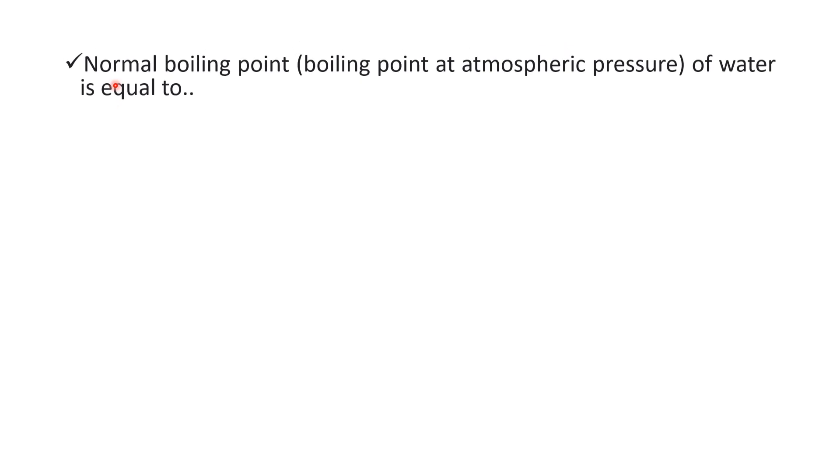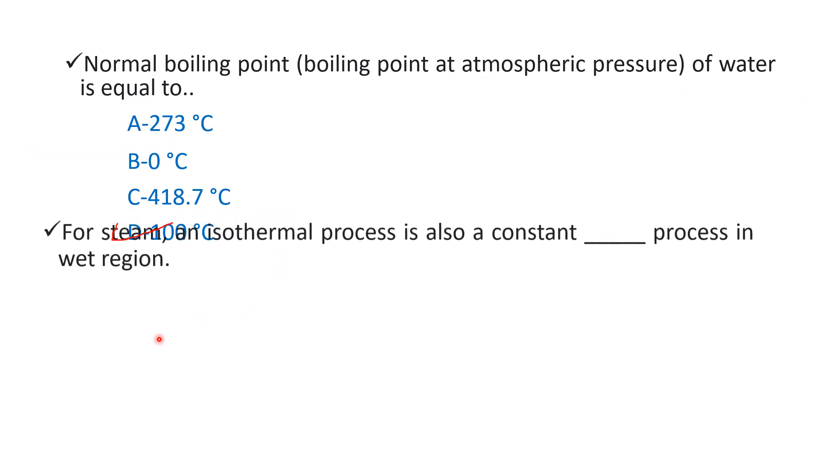Over here first question is normal boiling point, any boiling point at atmospheric pressure of water is equal to option A 273 degree Celsius, option B 0 degree Celsius, option C 418.7 degree Celsius and option D 100 degree Celsius. So over here right answer is option D 100 degree Celsius. Yani ki normal boiling point of water kitna hota hai? 100 degree Celsius. This temperature per water boil honne lagta hai. Isko bolenge normal boiling point of water.